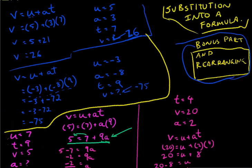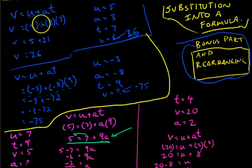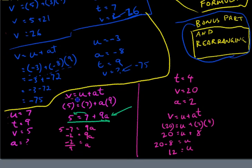So two key concepts here. Substitution into a formula: make sure you put those brackets in there. It slows you down and makes sure that you get the right answer. And two, bonus part, rearranging. Given a formula, as long as you know all but one values, you should be able to figure out the last value.